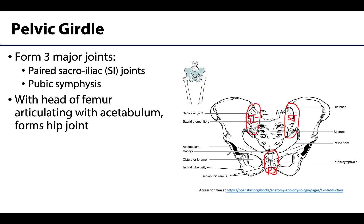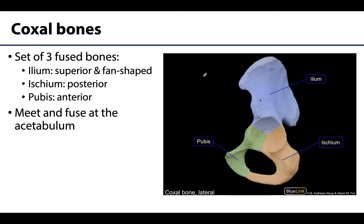Although the femurs are not officially a part of the pelvic girdle, they are very closely associated as the lower limb component that articulates with the coxal bones to form the hip joints. The hip joints are going to be where the coxal bone articulates with the head of the femur.